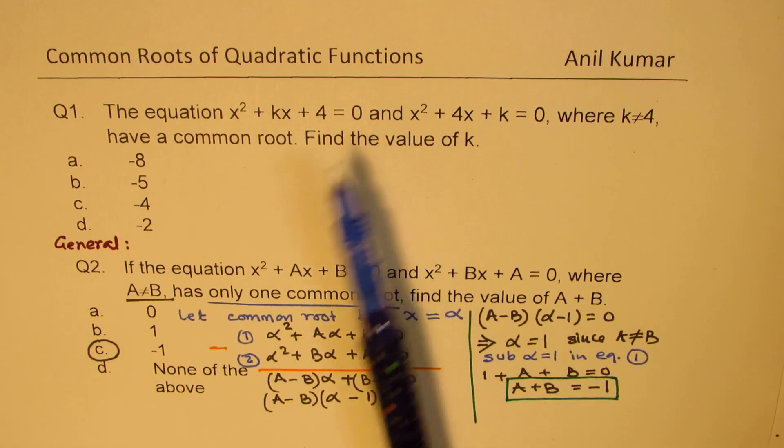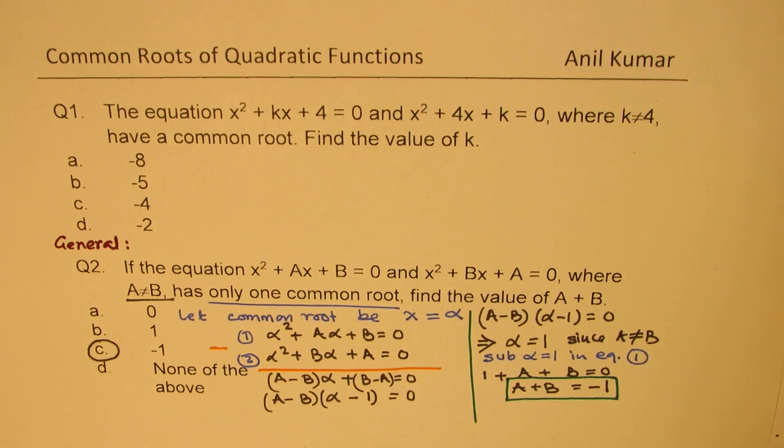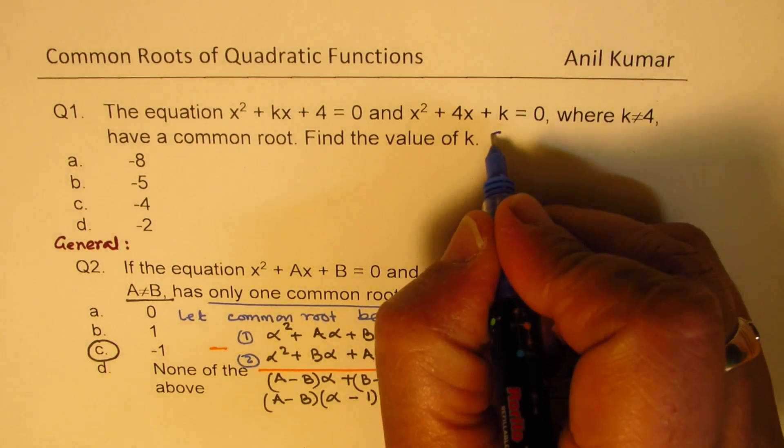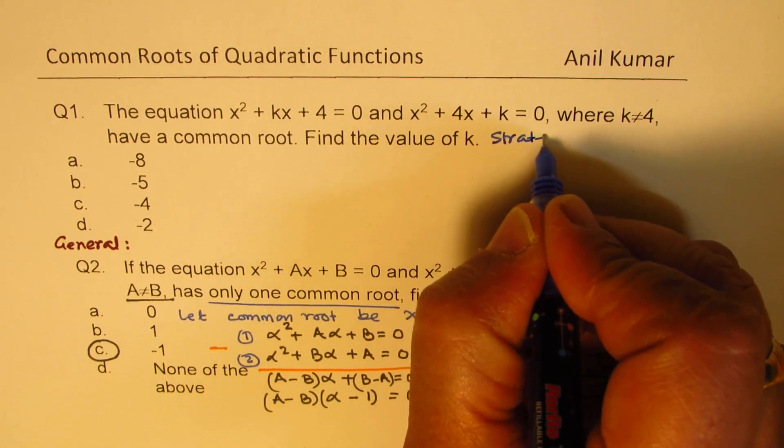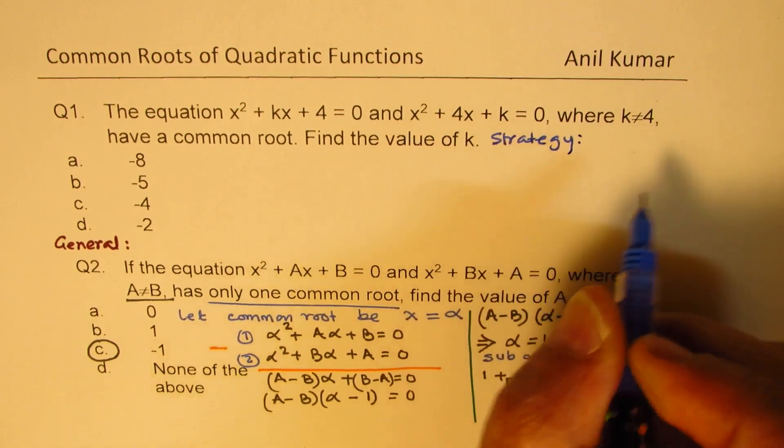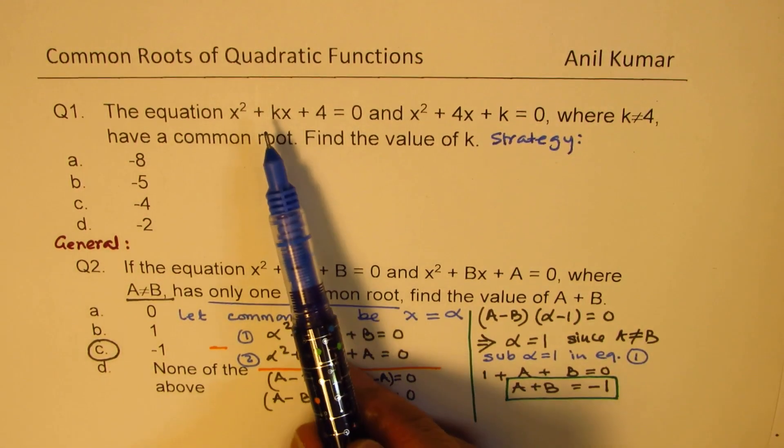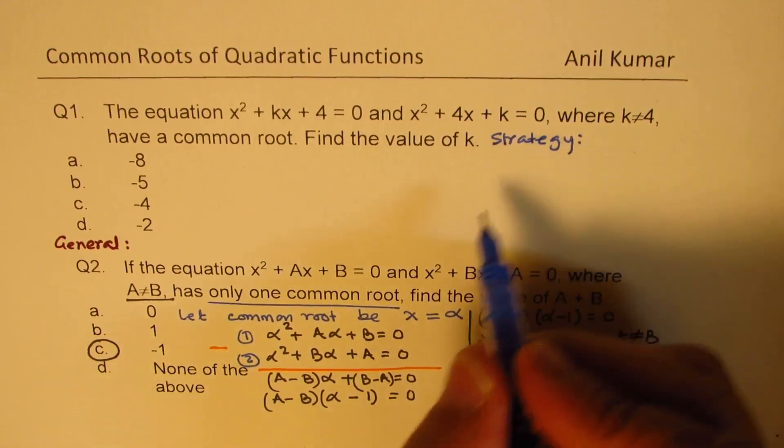Now if you look into the question and apply this strategy, so apply strategy. So strategy says that k + 4 should be -1, right?